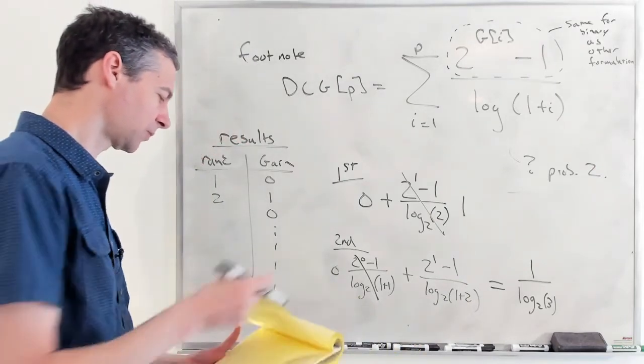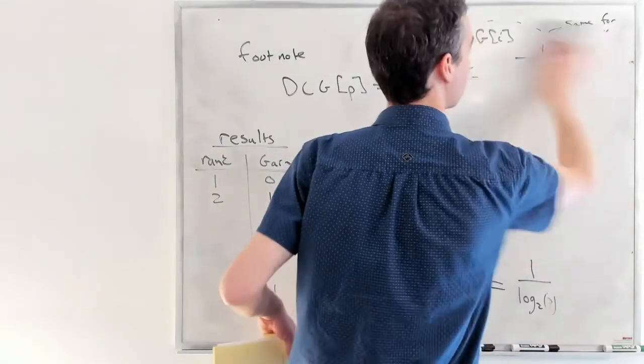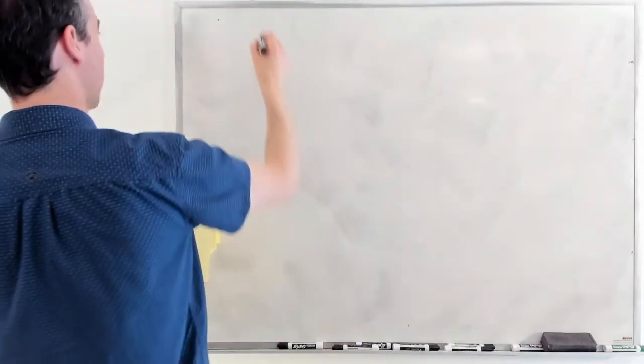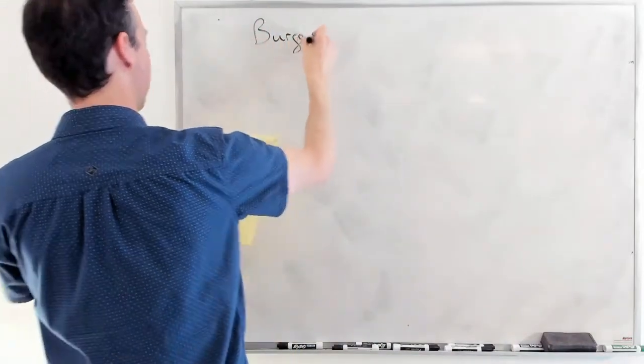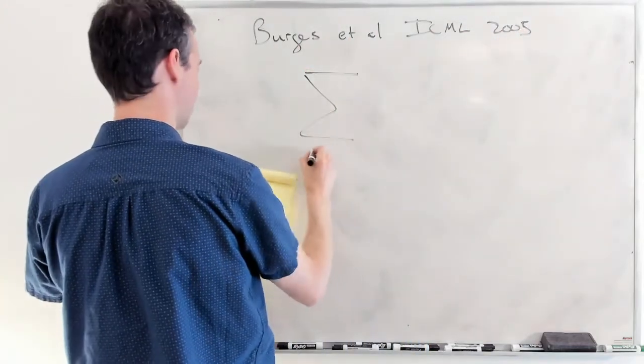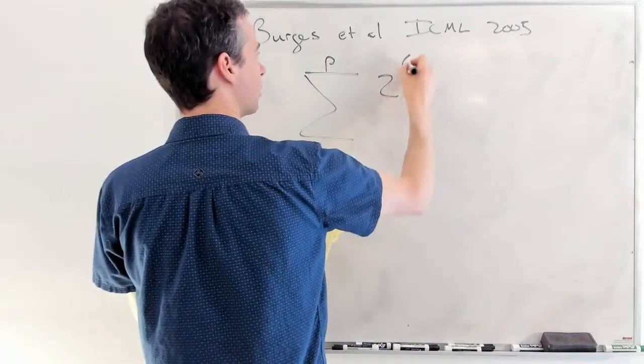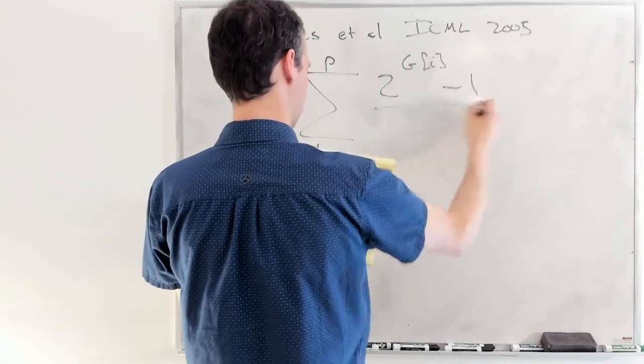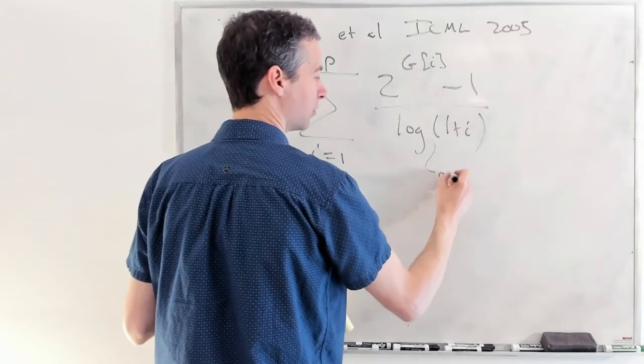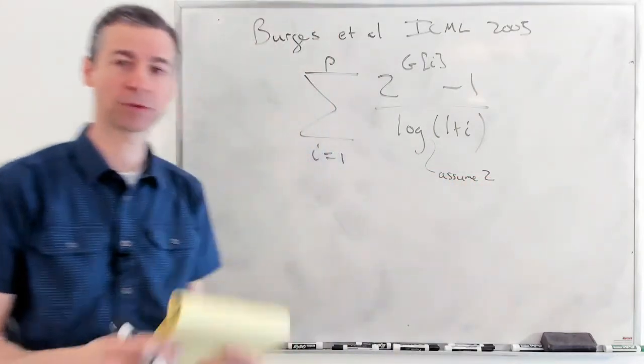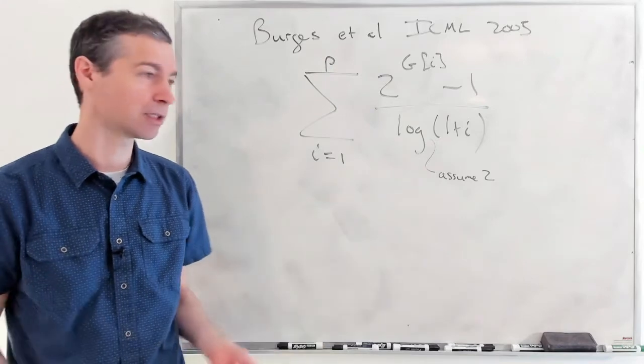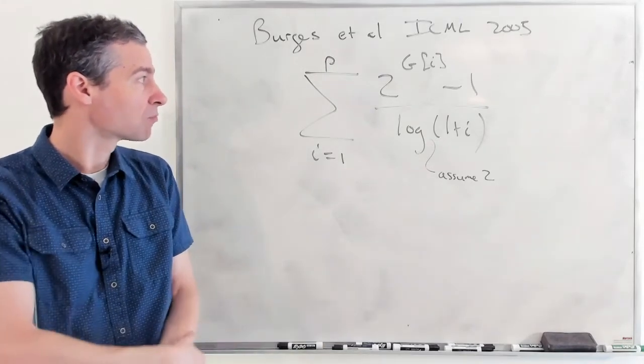Now, where did these other alternative formulations of DCG pop up? These appear to have all stemmed from work of Burgess back in 2005, ICML paper. And in there, the summation is from rank 1 to P. We've got 2 raised to the power of g sub i minus 1 all over log of 1 plus i. And again, we don't see what this is specified as, but we'll assume that's 2. It's very common for computer scientists to assume the base is 2 when not given, because everything is binary. So we'll just assume it's 2. So that's their formulation.